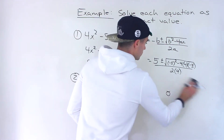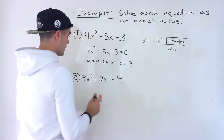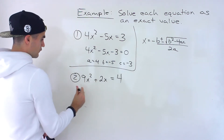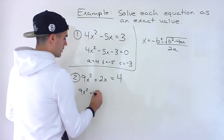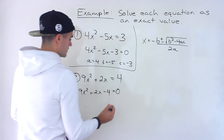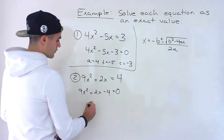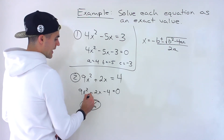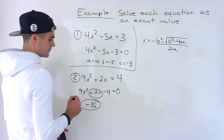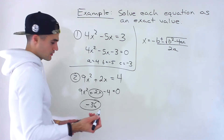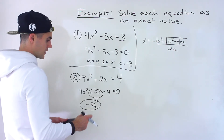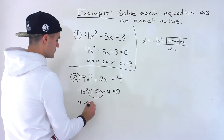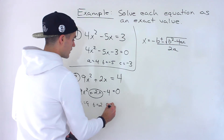Now for number two, we're going to use the same formula. If we bring the four over, notice nine times negative four gives us negative 36, but there are no two numbers that multiply to negative 36 and add up to positive two. So this isn't going to factor, and we use the quadratic formula again. In this case, a = 9, b = 2, c = -4.